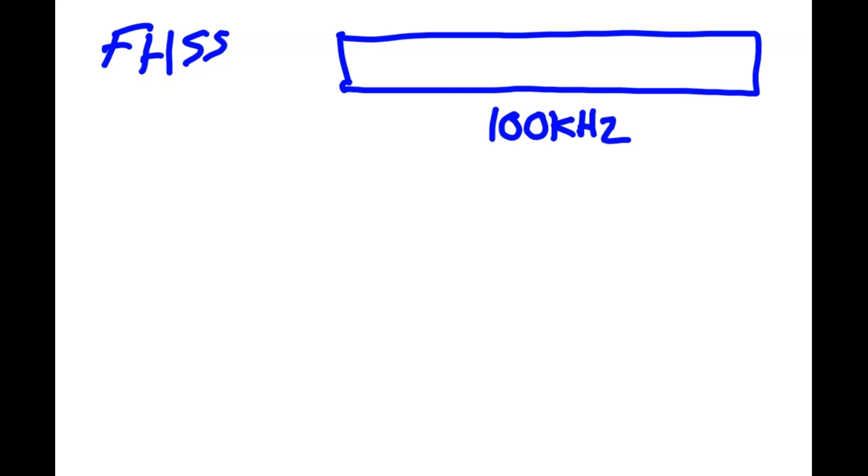Ultimately, we're talking about a system that has a total system bandwidth of 100 kilohertz. It's made up of a number of channels, and each one of these channels has a channel bandwidth of 5 kilohertz.